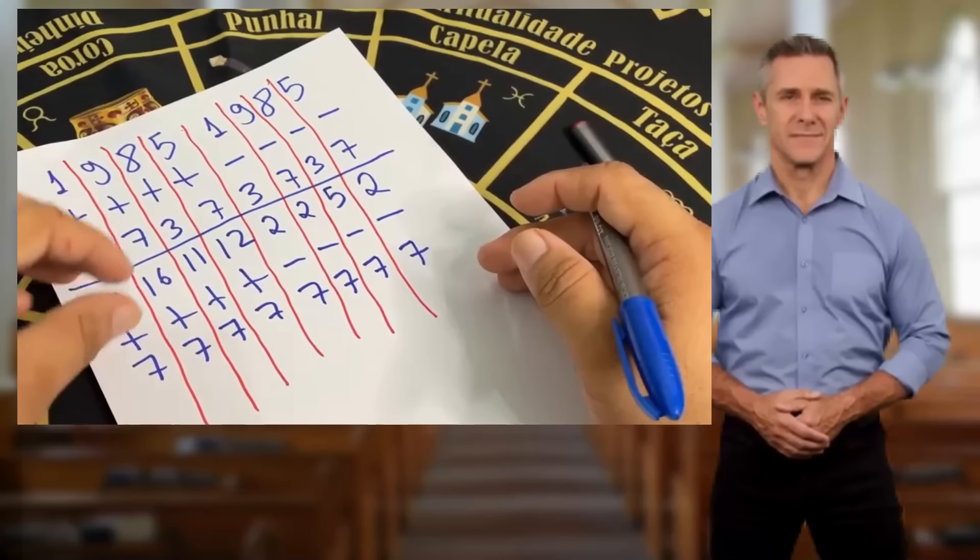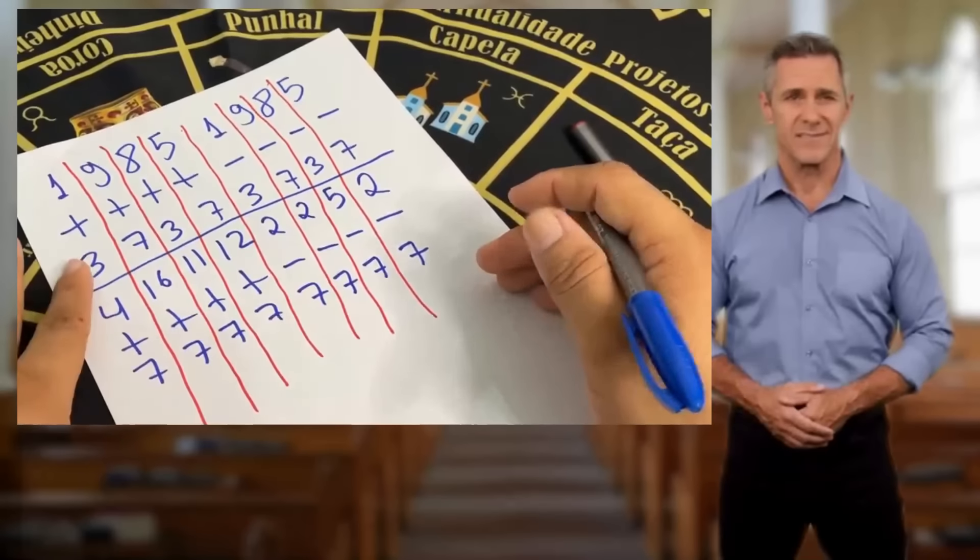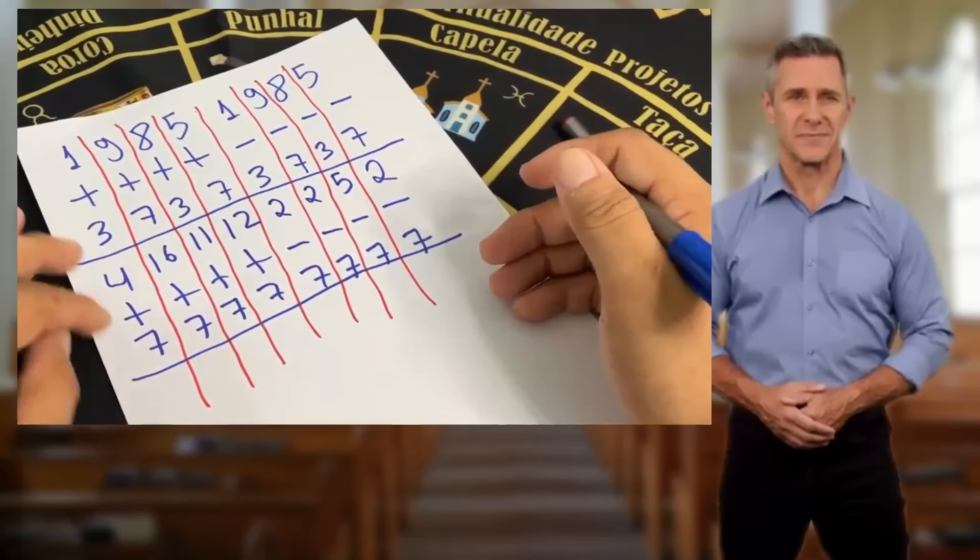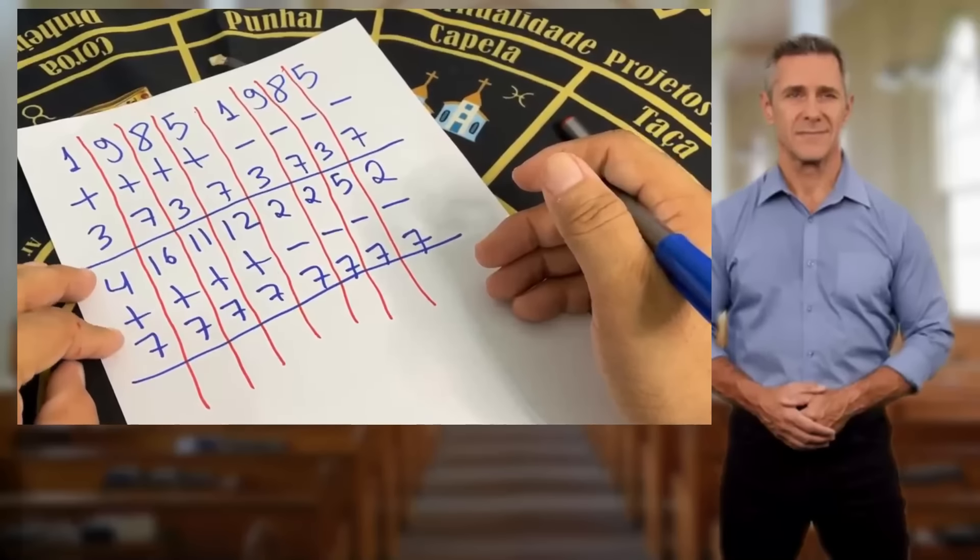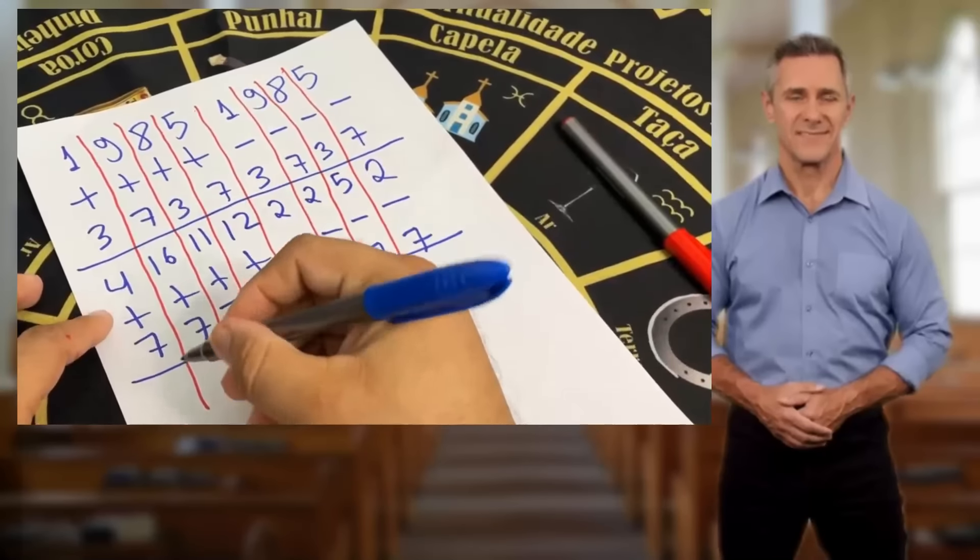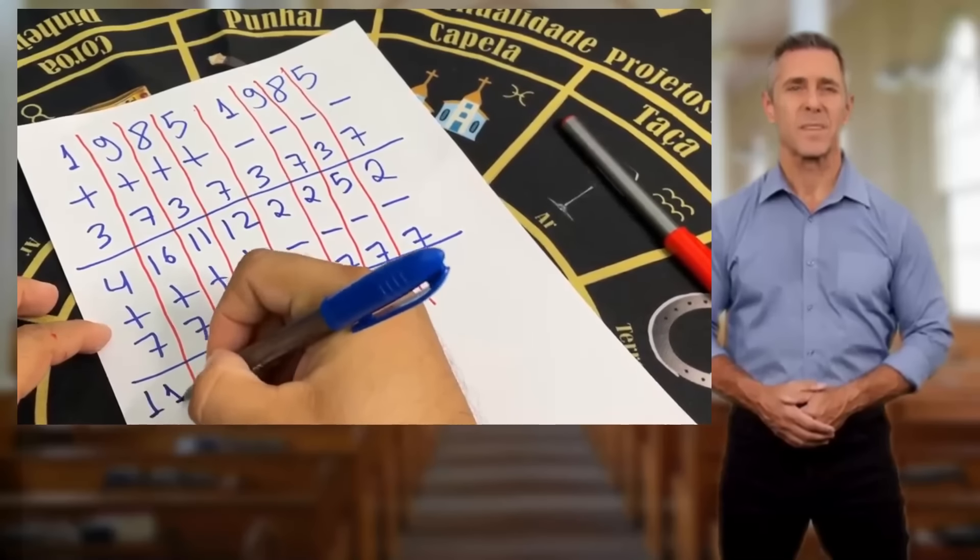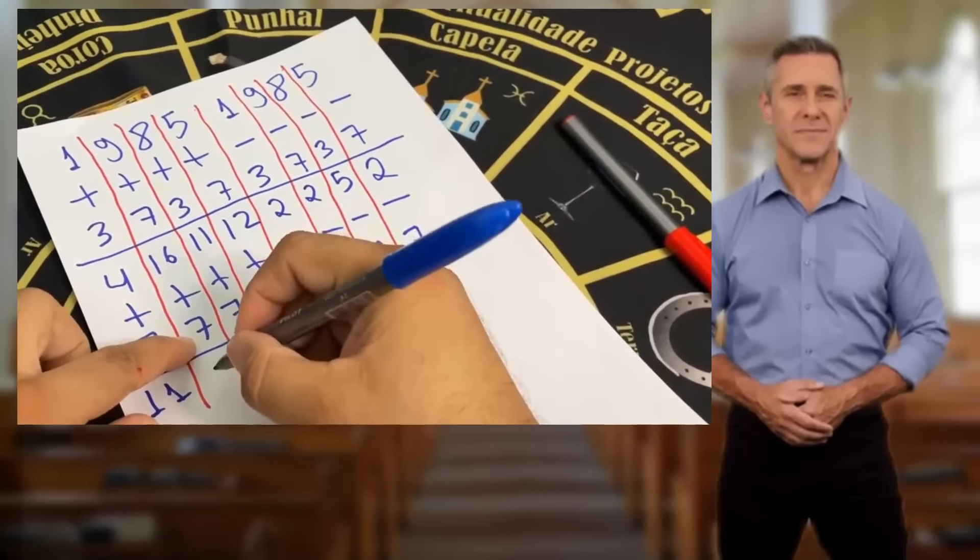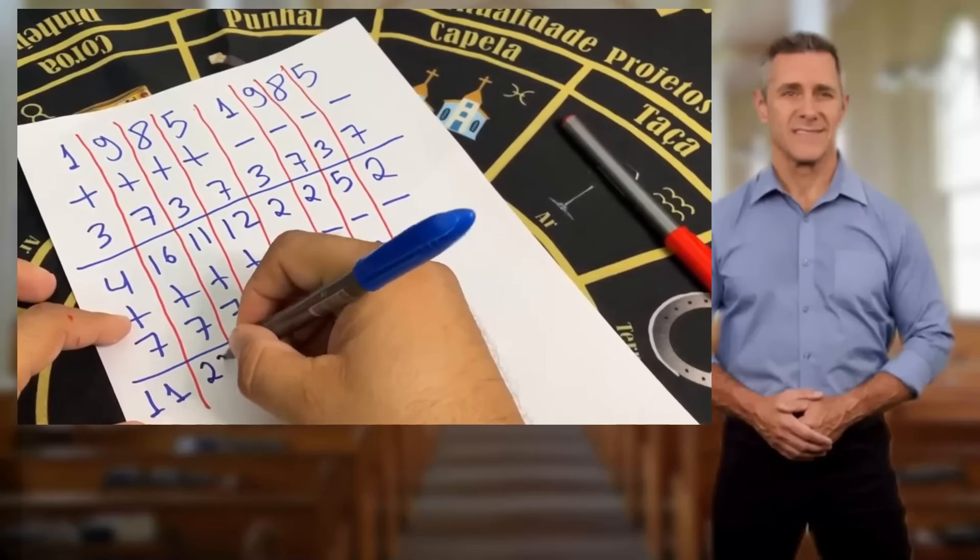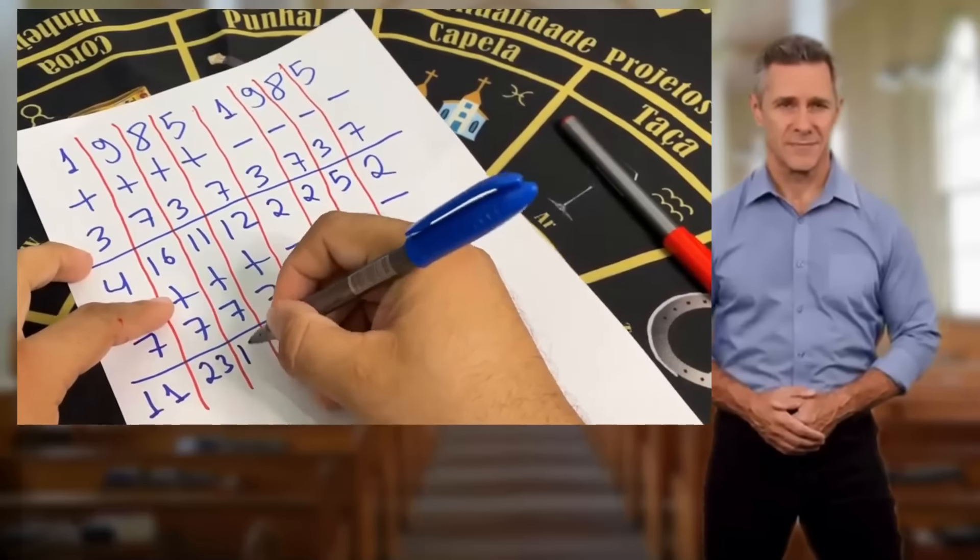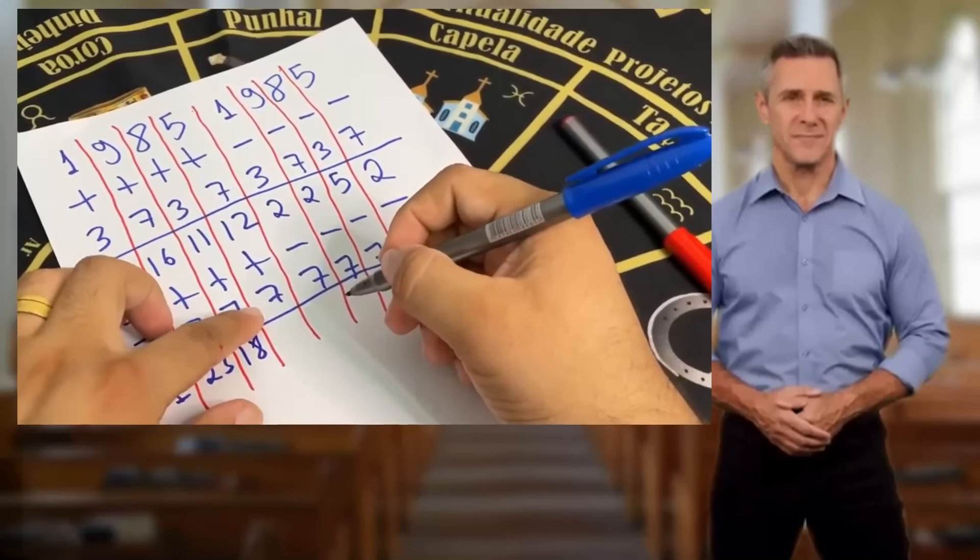Where there is a plus sign, you just add normally, and where there is a minus sign, you will take the largest number and subtract it by the smallest number. Let's do that. 4 plus 7 is 11. 16 plus 7 is 23. 11 plus 7 is 18. 12 plus 7 is 19.